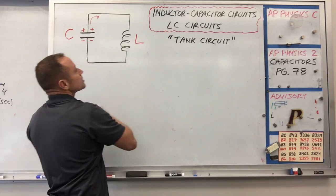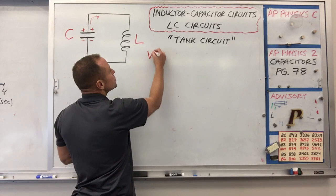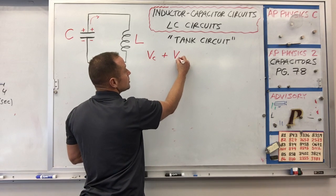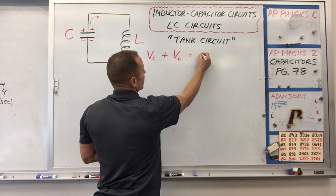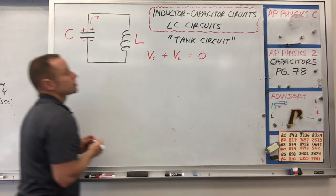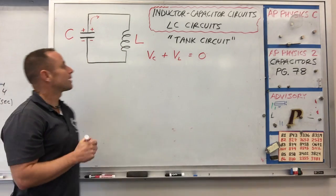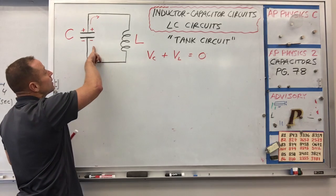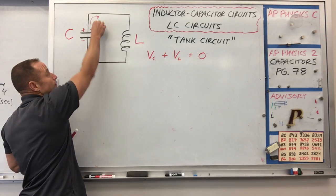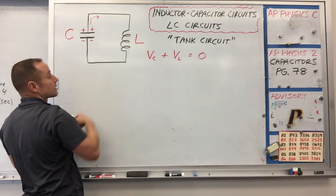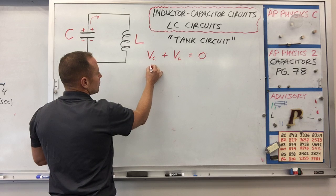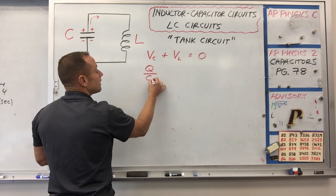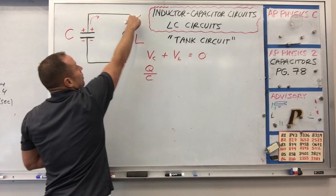If you go around this circuit, you're going to have a voltage change as you go across the capacitor and a voltage change as you go across the inductor, and those voltage changes are going to add to zero. If we go this way, we're going to climb voltage as we go across the capacitor and what you'll get is a voltage change of Q over C.